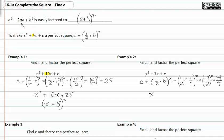We can rewrite our perfect square trinomial as x squared minus seven x plus forty-nine fourths. Since we now have our perfect square trinomial, it factors to x minus seven-halves, quantity squared. Notice that if your middle term is negative, then the factored binomial is also going to be negative for a perfect square trinomial.